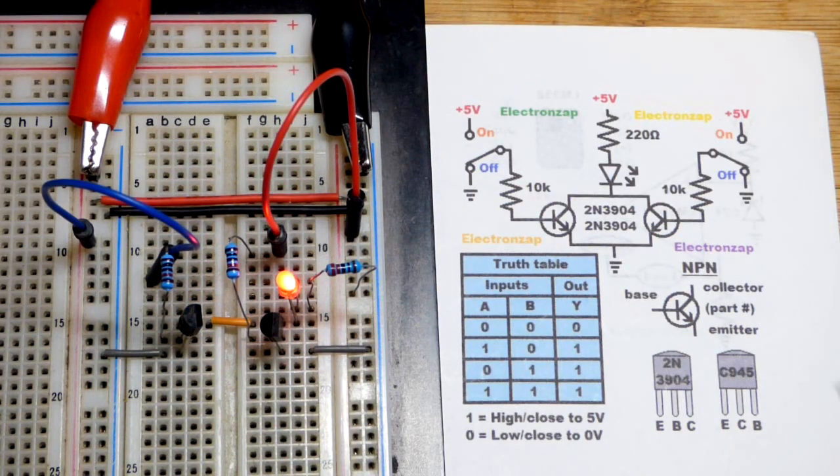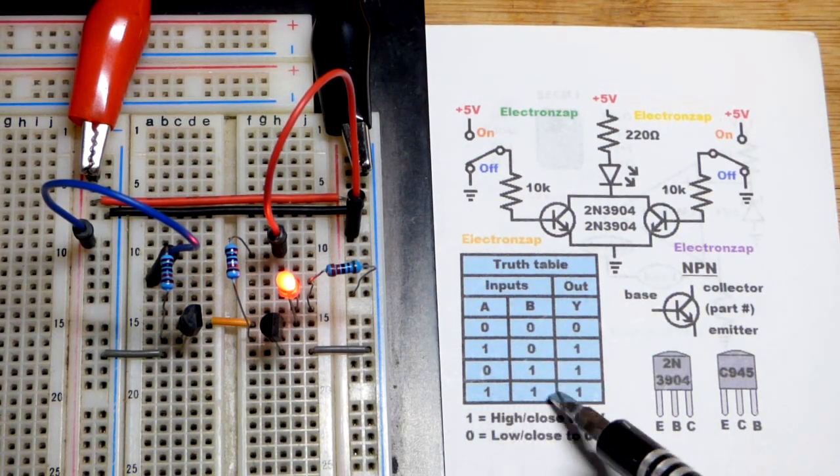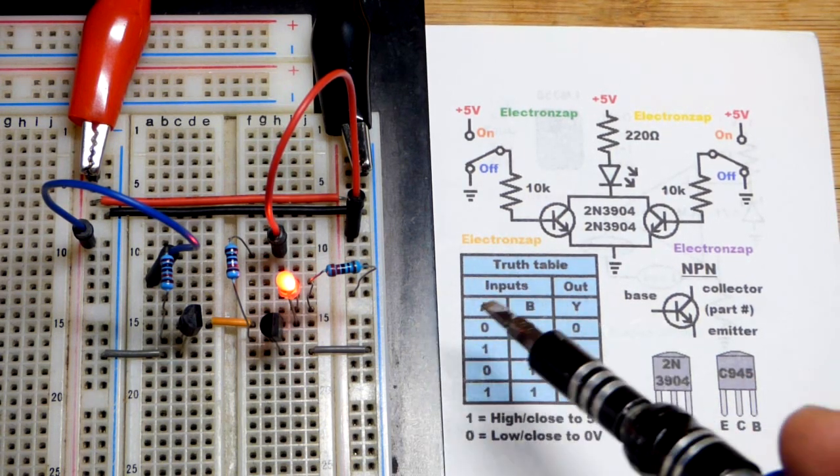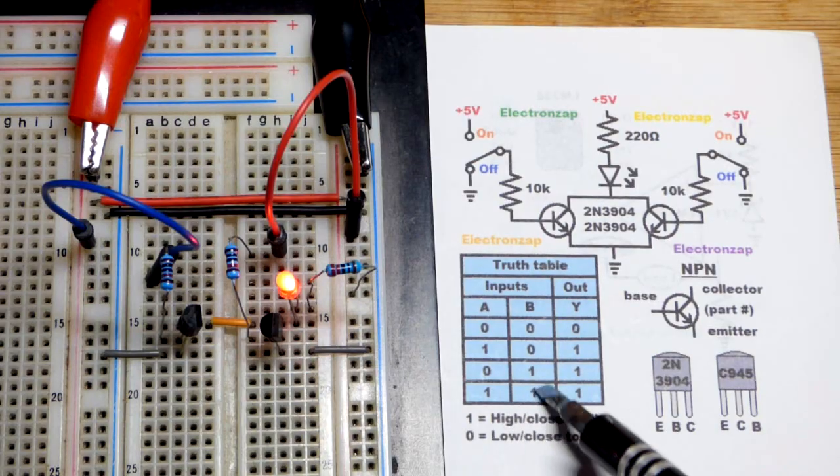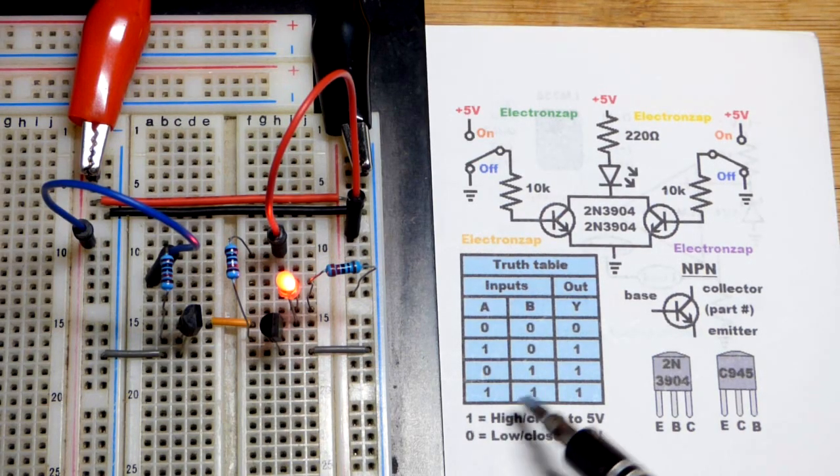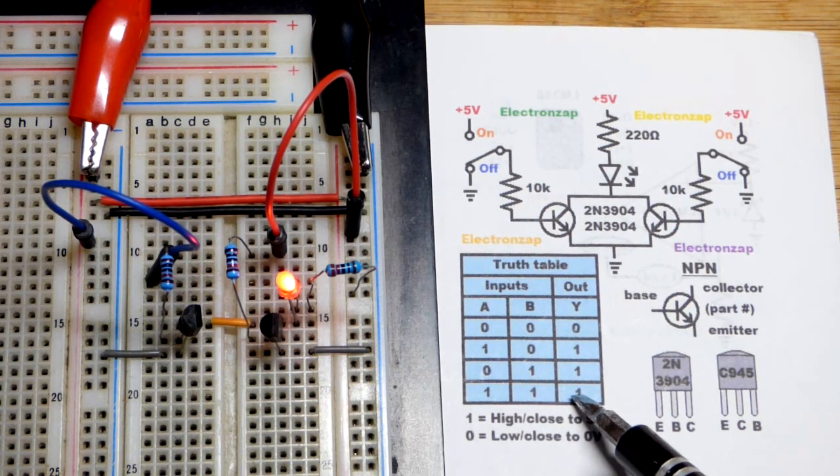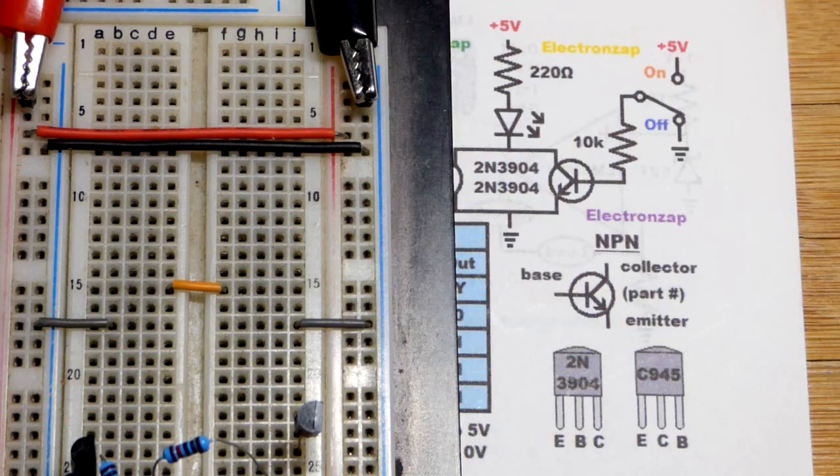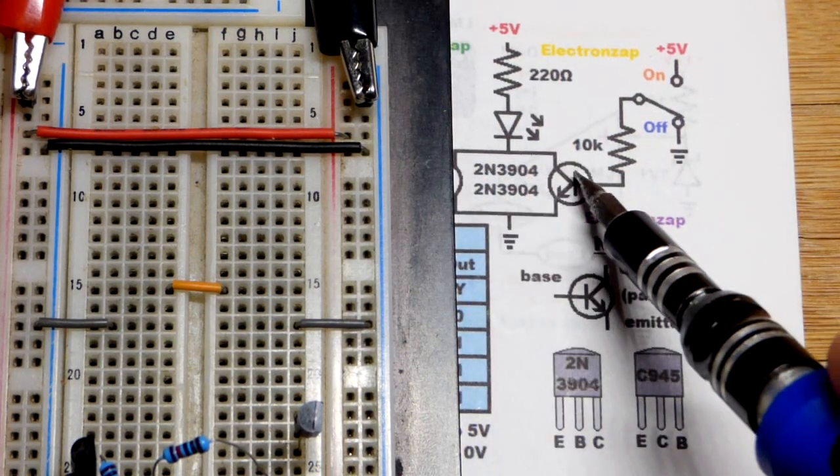Whenever you have an OR gate, you could have one or more of the inputs high. It doesn't matter how many. You can have all of them. You may have more than two inputs. We only have two in this particular example. But they can all be high. The output will be high, just as long as at least one of them is high.